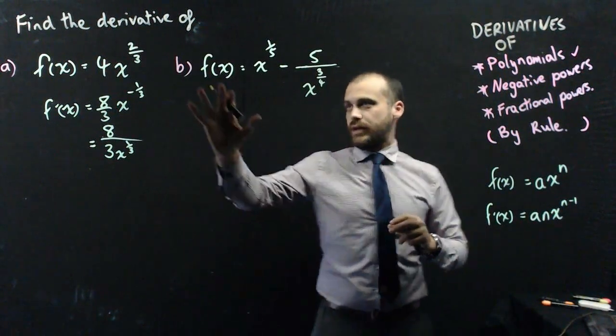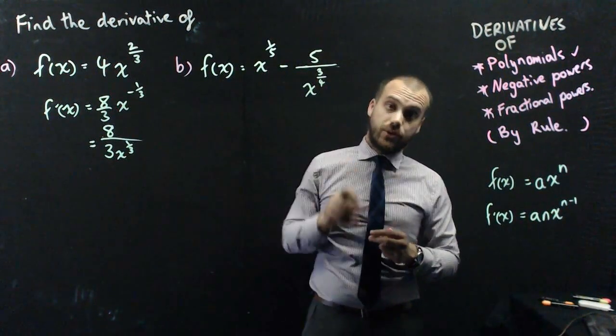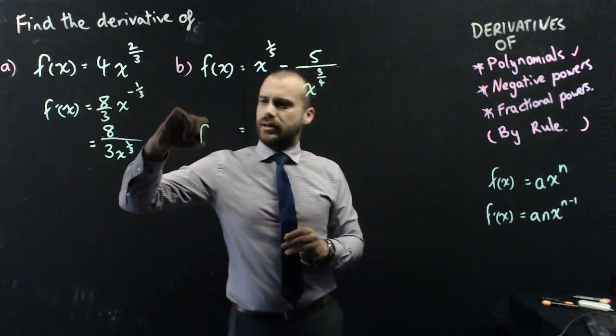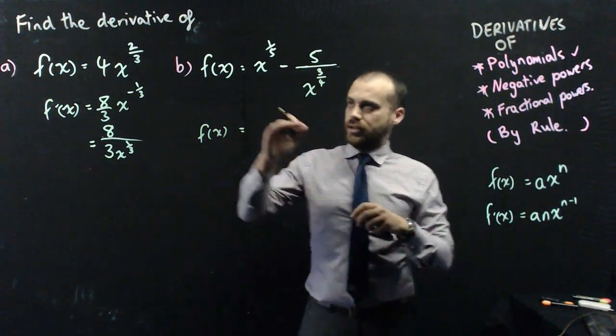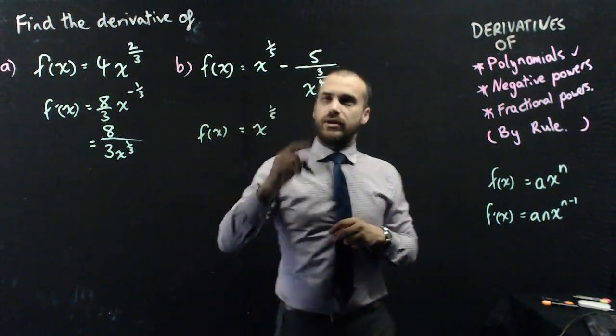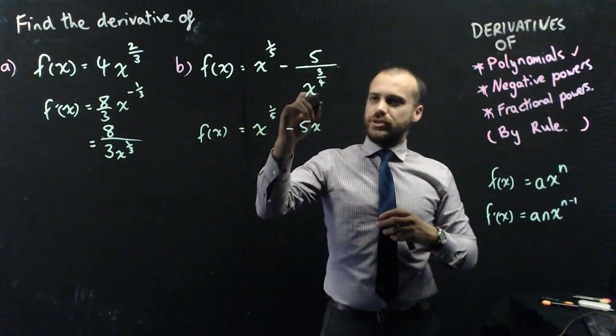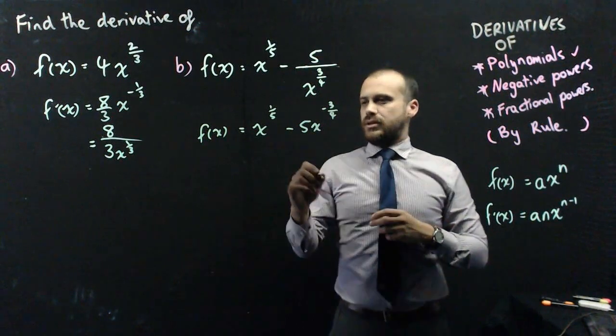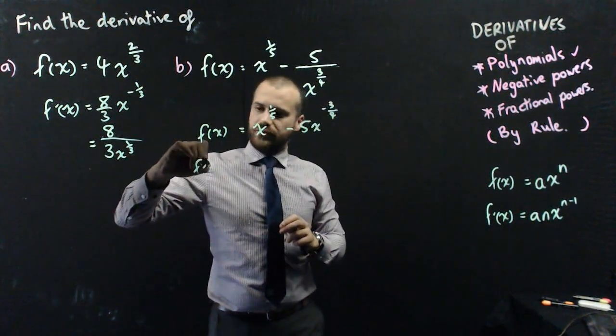Alright, one more. Try to keep it tricky. f of x equals x to the 1 fifth minus 5 over x to the 3 quarters. So, I can't deal with it yet. Because there's an x on the bottom of a fraction. You can't have that. So, I'll just leave this first one as it is. x to the 1 fifth. And then I'll move that up to the top. 5x. And when I move it to the top, that 3 quarters becomes negative 3 quarters. Alright, now that I've got the x's on the top, I can find the derivative just fine.